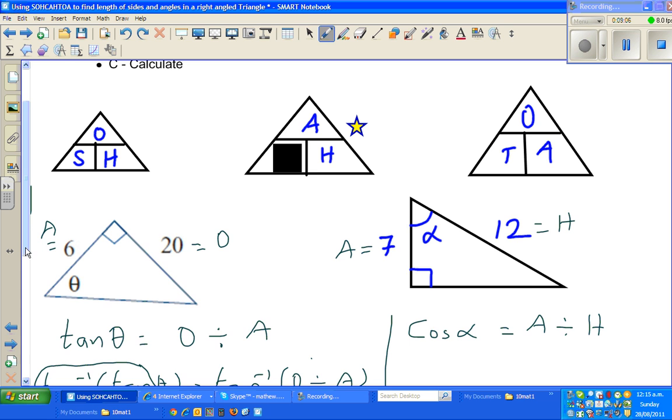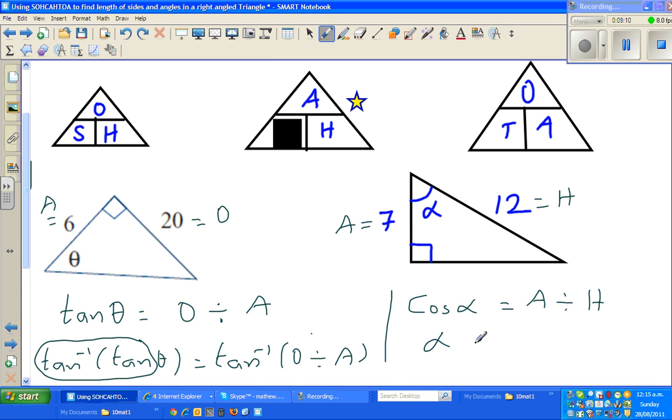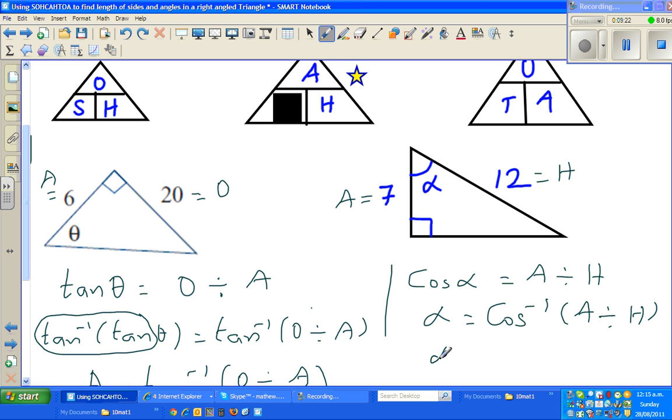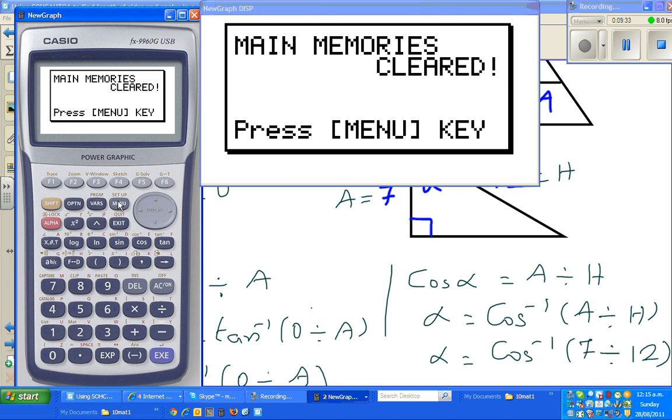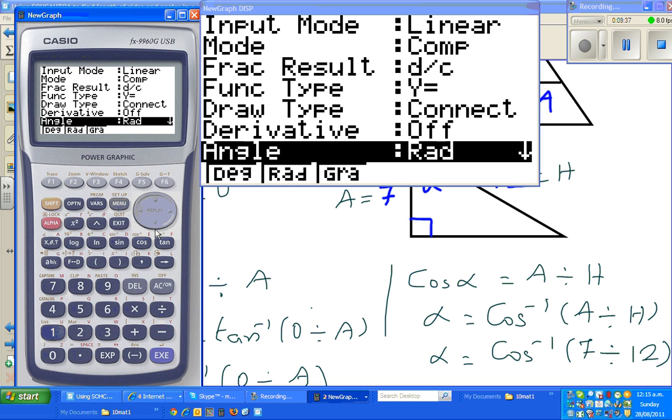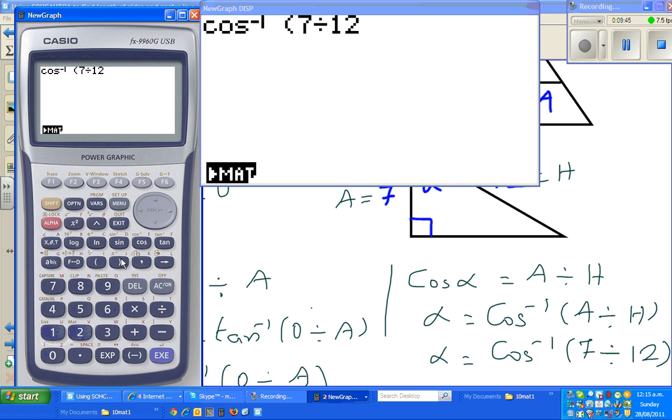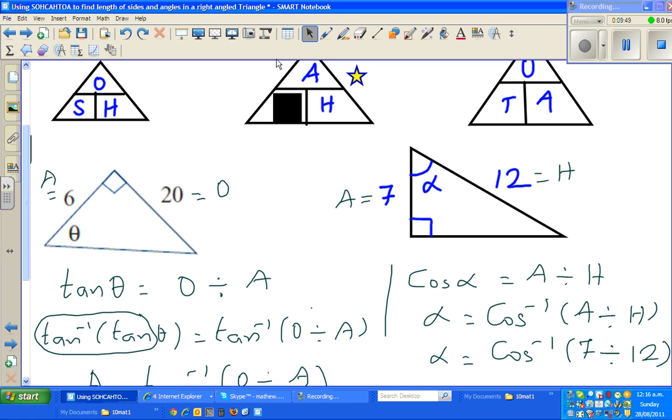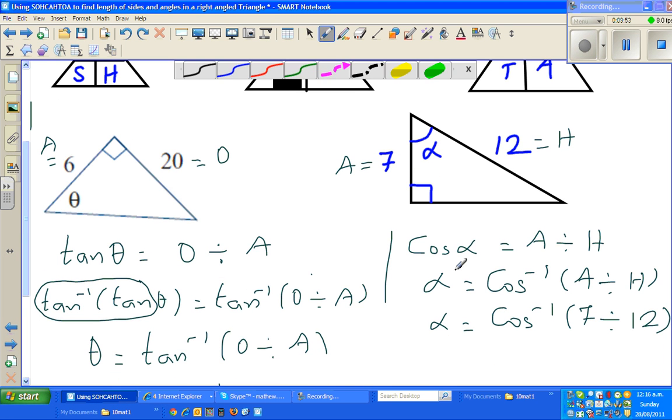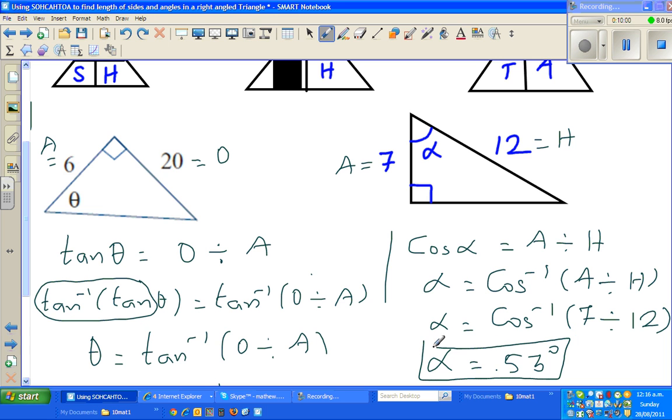Excuse me, I got a bad cough. So alpha would be cos inverse of A divided by H. It's the same thing. Here you are taking cos inverse of both sides. Alpha would be cos inverse of A is 7 divided by 12. Get the calculator out. We are dealing with degrees. Shift cos 7 divided by 12, close the bracket. That is 53 degrees. So the answer is alpha is 53 degrees, rounding to the nearest degree. See you in the next video.